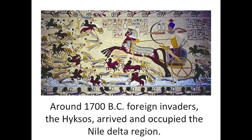Around 1700 BC, foreign invaders — the Hyksos — arrived and occupied the Delta region of Egypt. The Egyptians were awed by their horse-drawn war chariots, but the Hyksos were also impressed by the Egyptian civilization and soon adopted many of their cultures. After more than 100 years, new leaders arose and drove out the Hyksos and set up the New Kingdom.